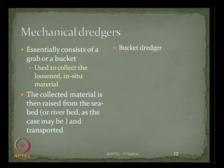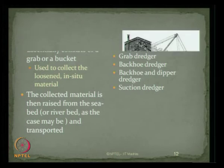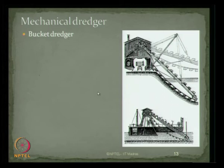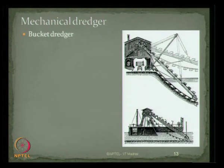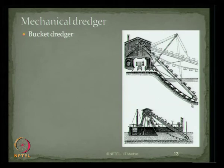There are different types of mechanical dredgers: bucket dredgers, grab dredgers, backhoe dredgers, and suction dredgers. A bucket dredger has a conveyor belt housing different buckets. The tip of the conveyor has a scraper and a cutter which loosens the material. As the belt moves, the bucket is loaded with loosened material and unloads it into a hopper. The tip is always equipped with a cutter which helps in loosening hardened deposits.